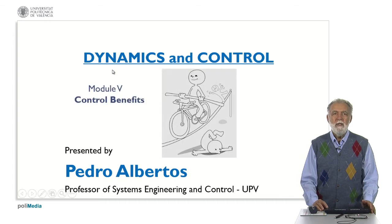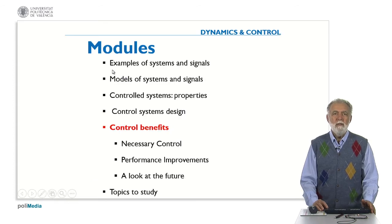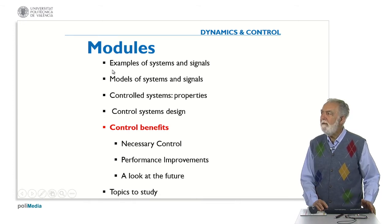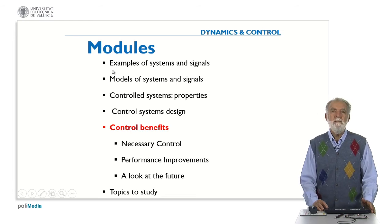Today we are going to finish module five, control benefits, asking some questions for you to think about what we have seen in this module. After the examples of systems and signals, the models and the properties of control systems, and how we can design control systems, we are emphasizing which are the benefits of control.